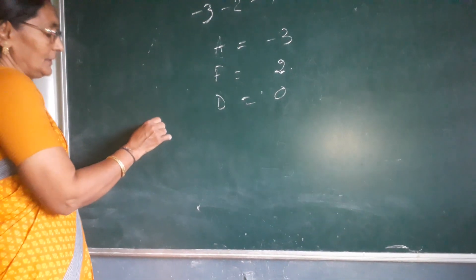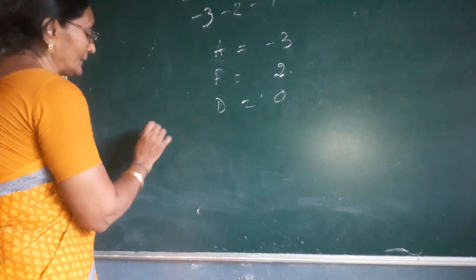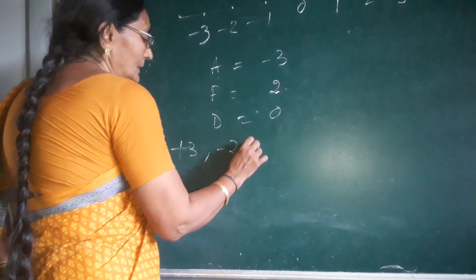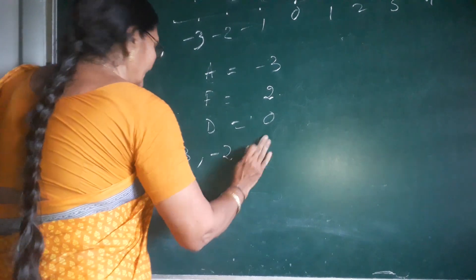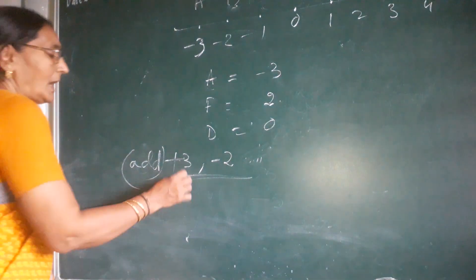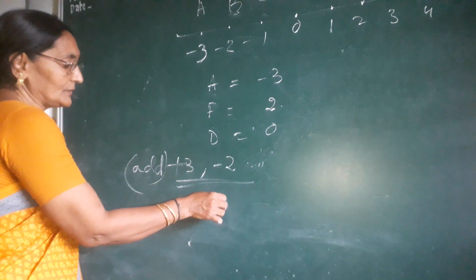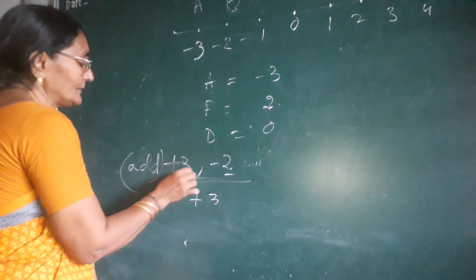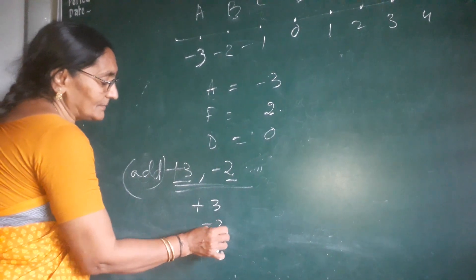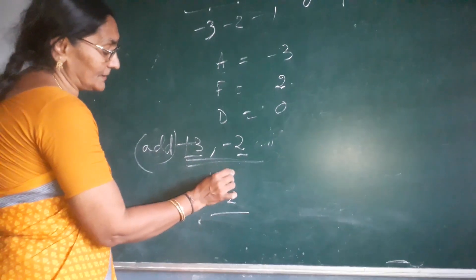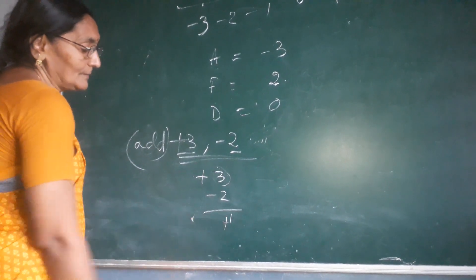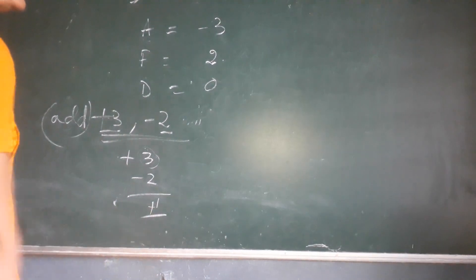Suppose two integers are given: plus three and minus two — add them. If one number is positive and one is negative, you have to subtract. First write the bigger number, then the smaller number, and subtract as usual. Three minus two is one, and since the bigger number is positive, the answer is plus one. This is the answer for the addition of these two integers.